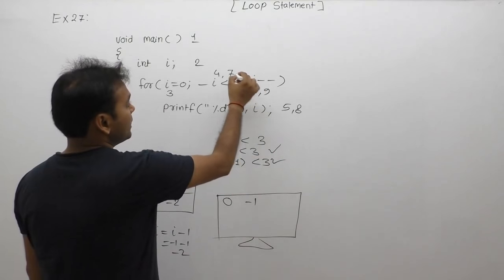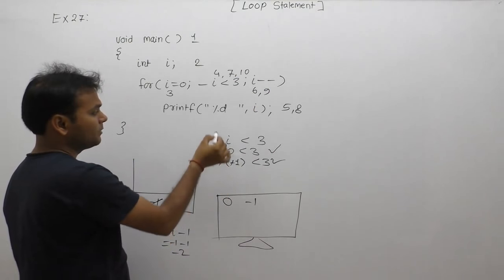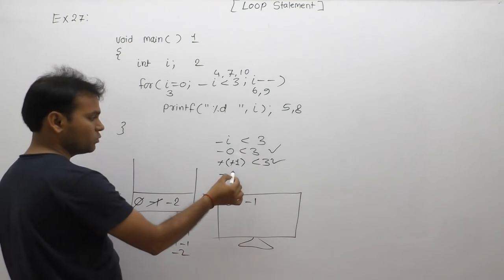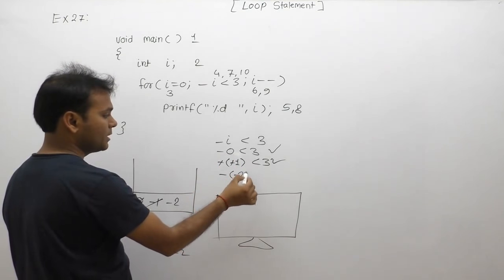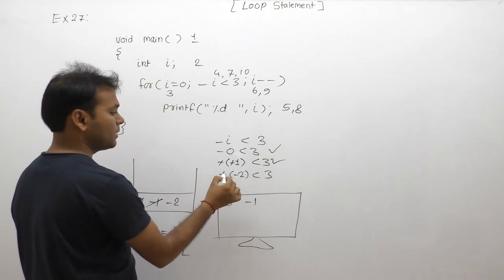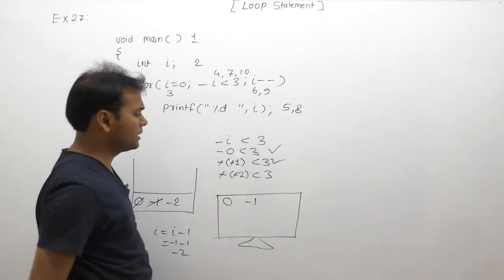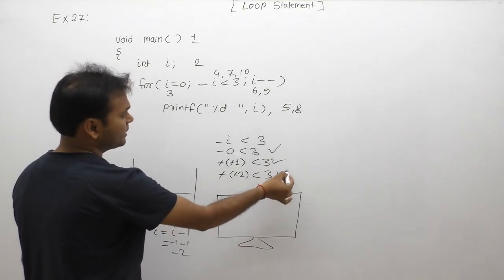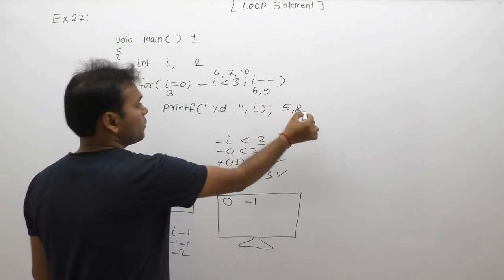Again tenth case, condition testing. Condition testing, again minus i. In place of i, value is minus 2. So in i's place, replace carrying minus 2 less than 3. Again minus minus 2 equals plus. Multiplication is plus, means 2 less than 3, condition again true. True, then again body.